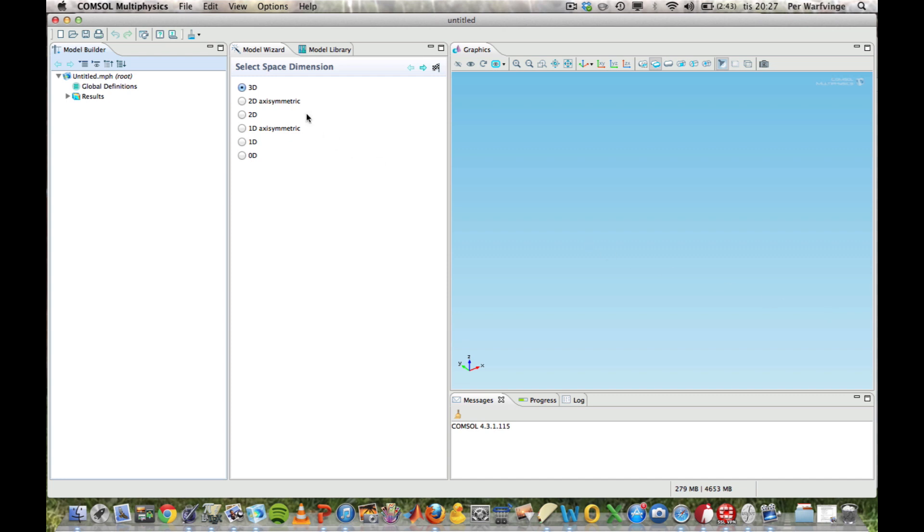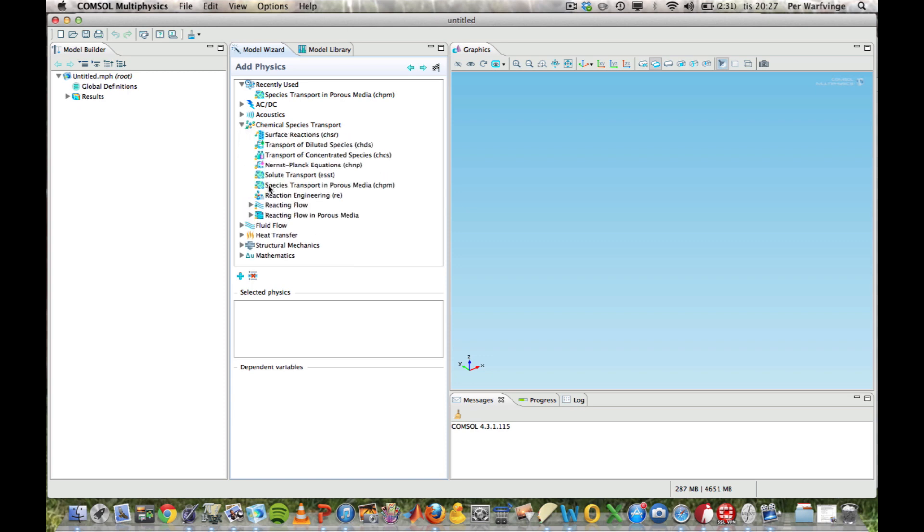And the first thing you do with a model wizard is to select the space dimension. And as you remember, we had something that was 10 long and 1 high, and that is 2 dimensions. So, it's a 2D, and the model I'm going to use is found in the Chemical Species Transport module, and we find it right there, Species Transport in Porous Media.